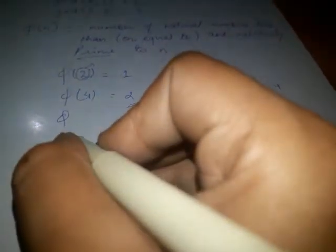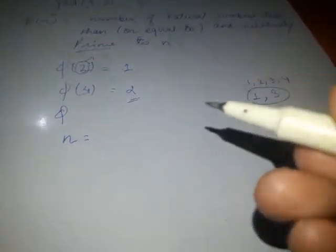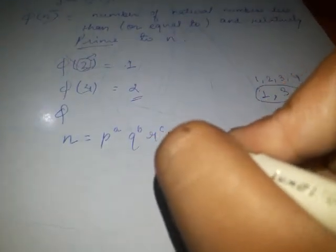Similarly we can find for any numbers. Now these are small numbers so we can find easily. What about big numbers? There are some methods to find it. The easiest way to find the number is: suppose we take any number n and we can prime factorize it into p to the power a, q to the power b, r to the power c, and so on.